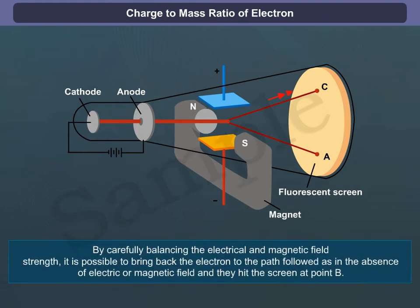By carefully balancing the electrical and magnetic field strengths, it is possible to bring the electron back to the path followed in the absence of electric or magnetic fields, and they hit the screen at point B.